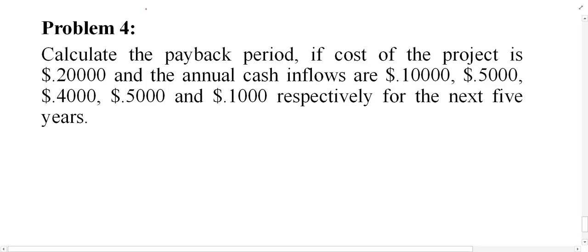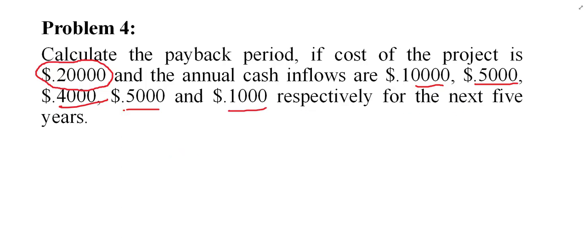Let's take one more example for payback period with unequal inflows. Calculate the payback period if the cost of the project is equal to 20,000. The annual inflow from the project for year one is 10,000, for year two it is 5,000, for year three it is 4,000, for year four it is 5,000, and for year five it is 1,000 respectively. You have to calculate the payback period.